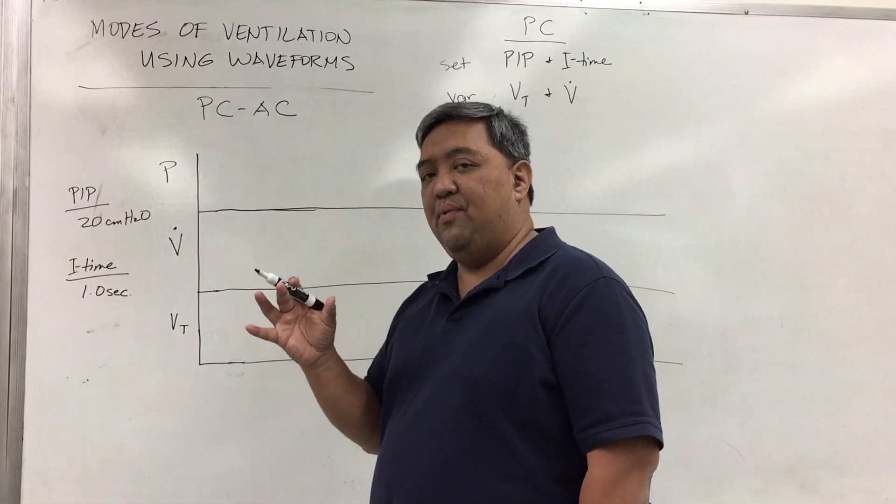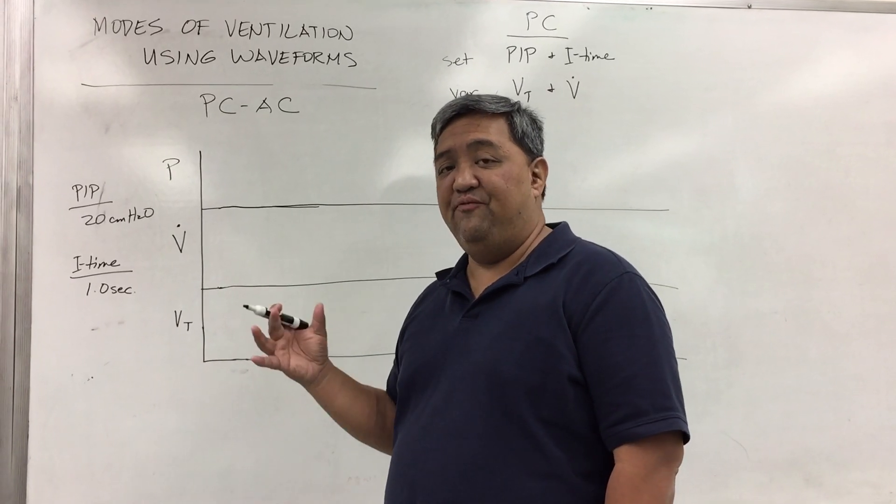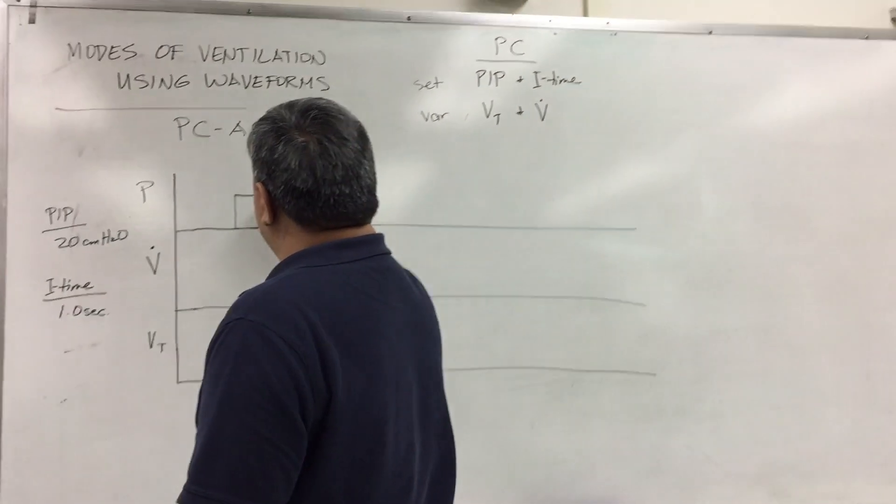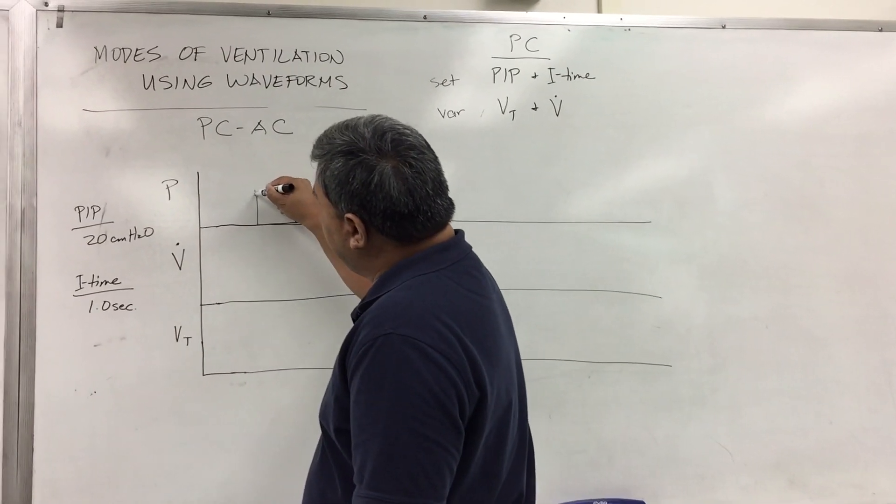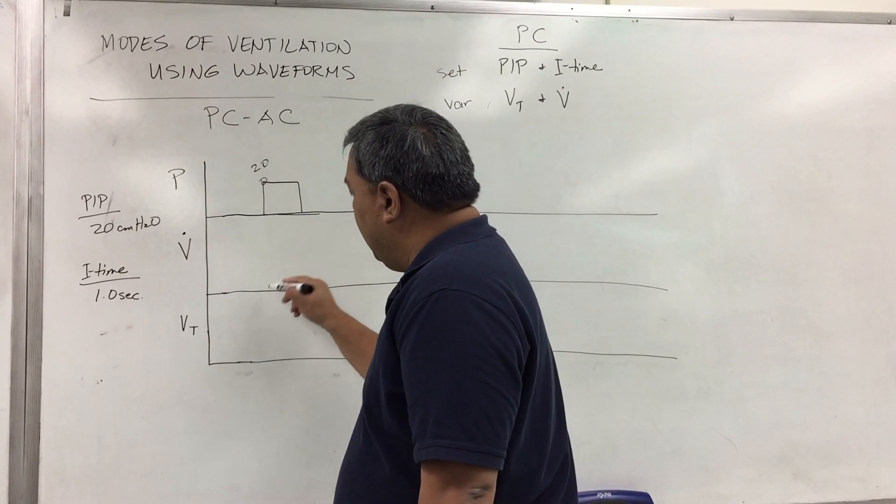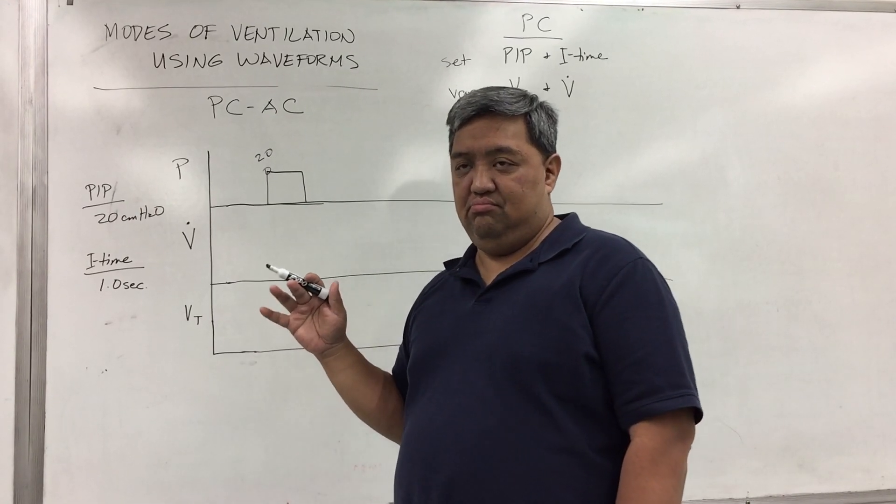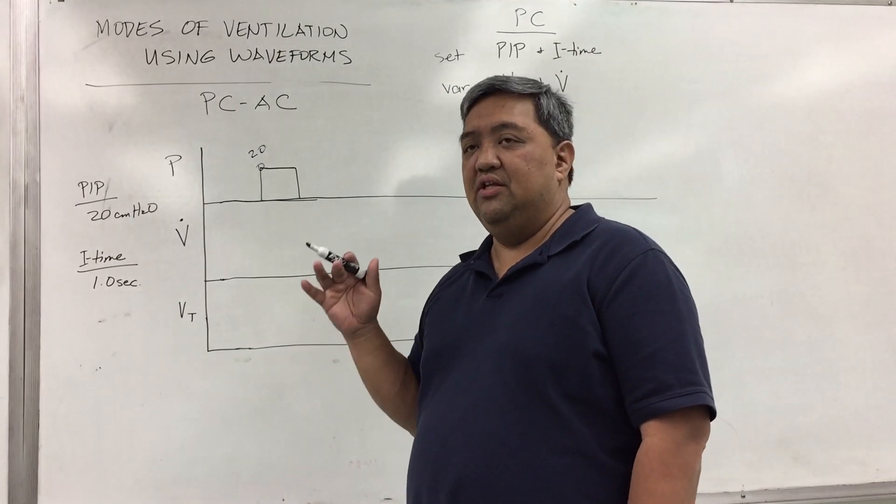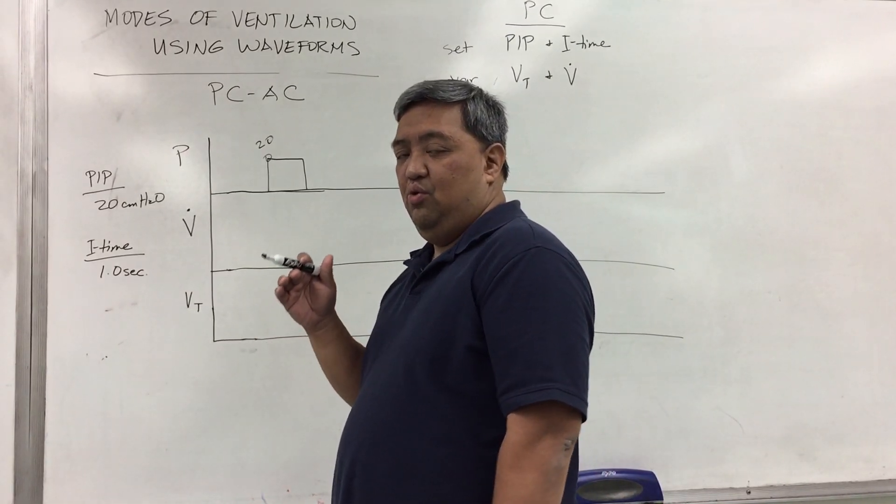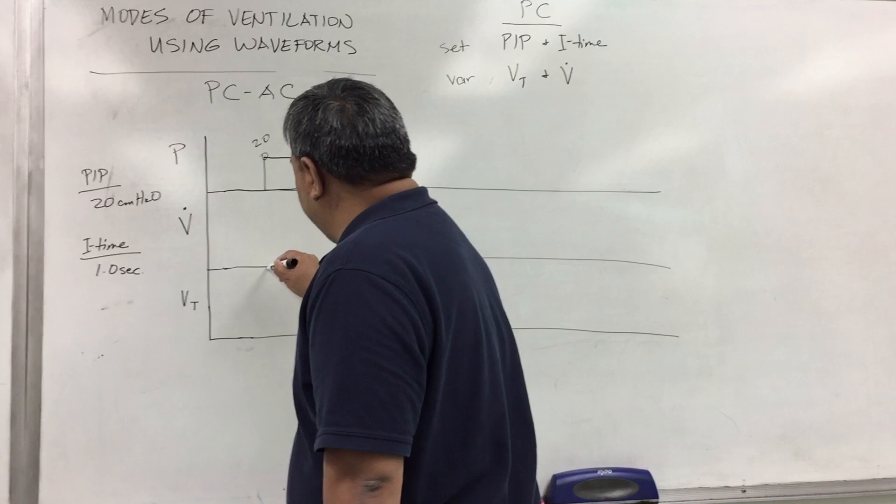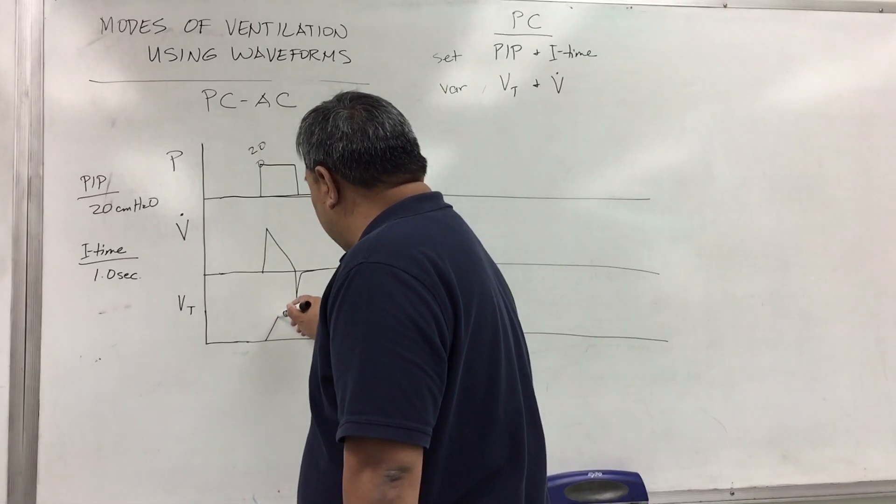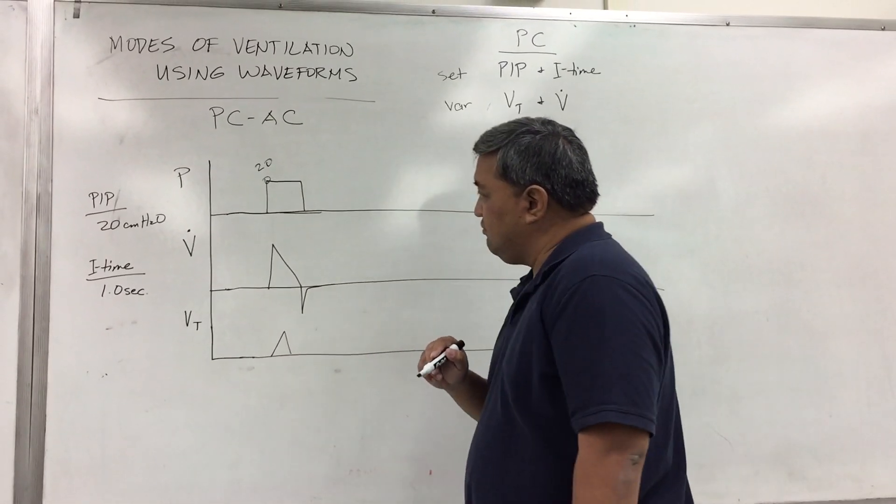If you remember our explanation on the different waveforms, when you say set, it's most likely a square waveform. So in this case, this peak inspiratory pressure here is your 20. In every pressure control breath, the flow is always a descending waveform or a ramp. Then you have a certain volume.